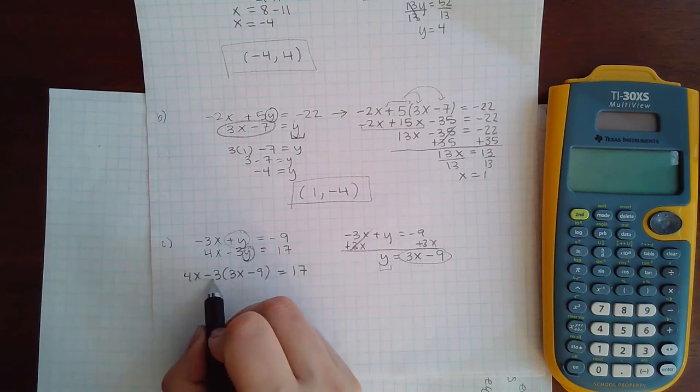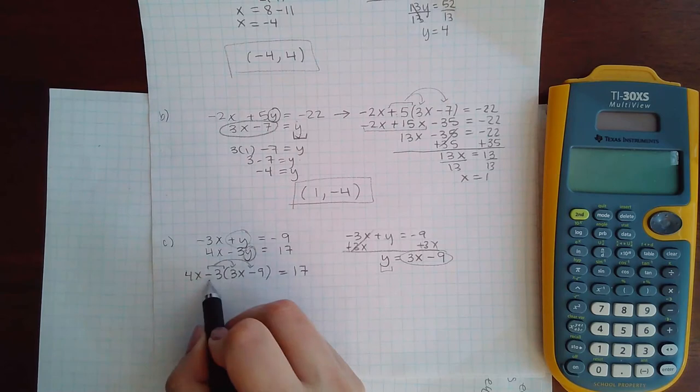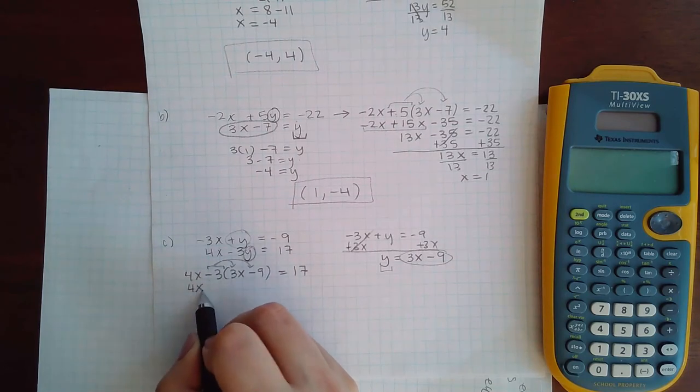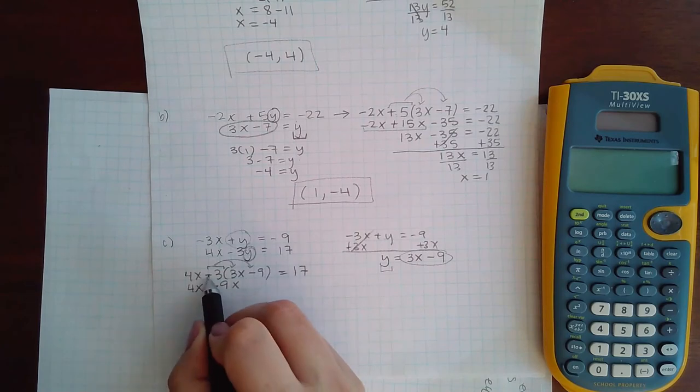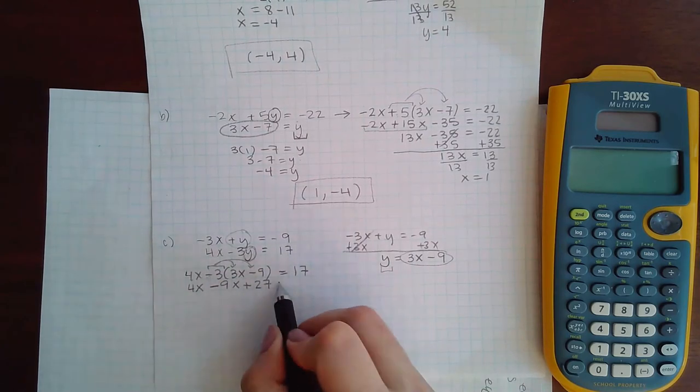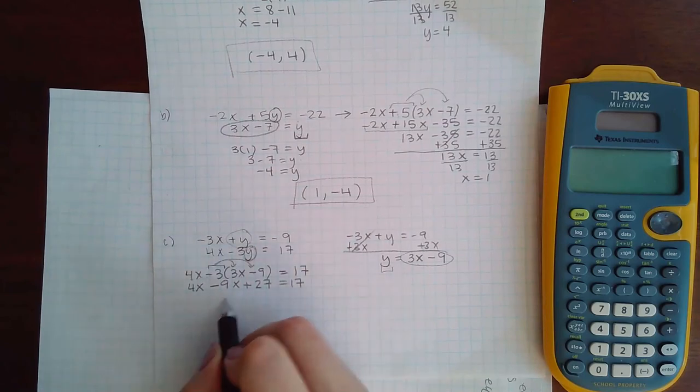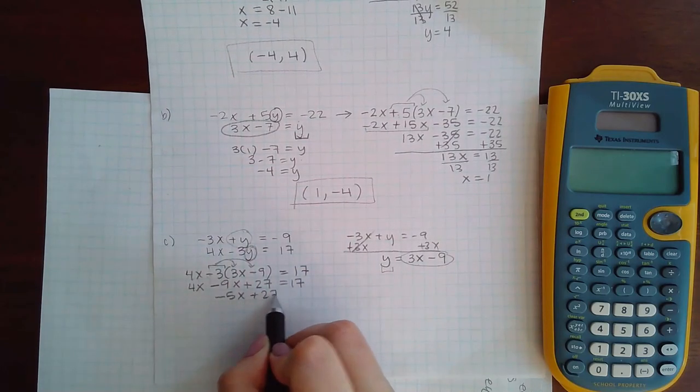So I cannot add or subtract until I multiply. So here I must multiply. But notice that this time I'm multiplying in negative 3. So negative 3 times 3x is negative 9x. Negative 3 times negative 9 is a positive 27. And if I combine my like terms, I end up with this equation.